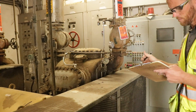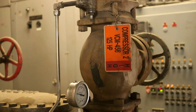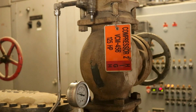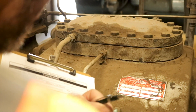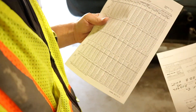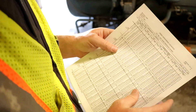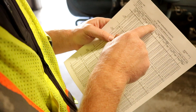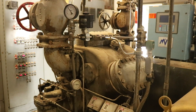Item A asks if the equipment is labeled and has a legible nameplate. A proper label consists of the component name and ID number. Items B and C ask if the compressor is suitable for ammonia and operating within limits. Suitability for ammonia can be verified by the equipment specifications provided by the manufacturer.